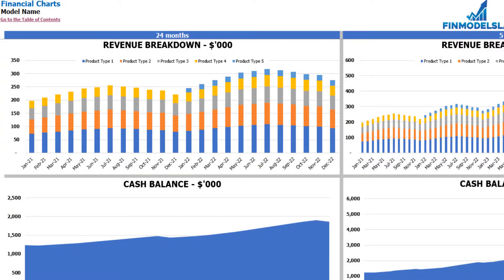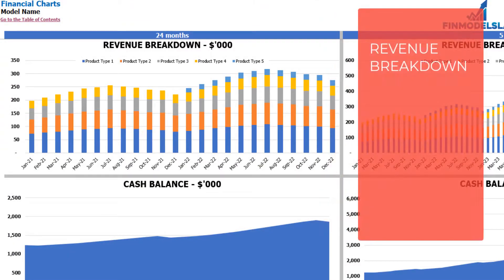On the financial charts tab you may see the main financial outputs in graphical form. On the left side you may see the chart for 24 months and on the right side you may see the chart for 5 years or 60 months.